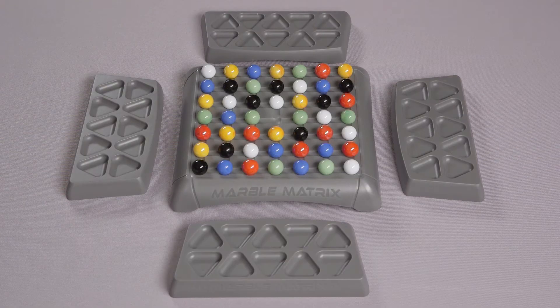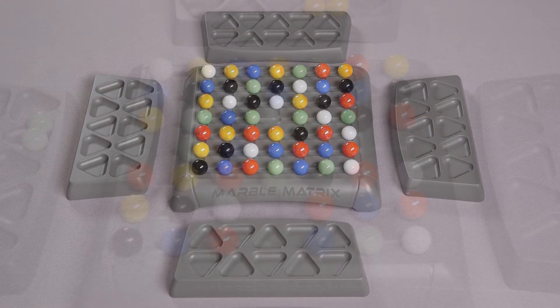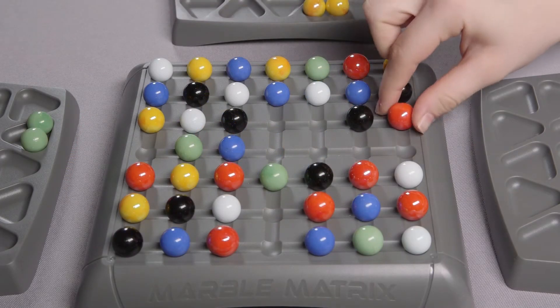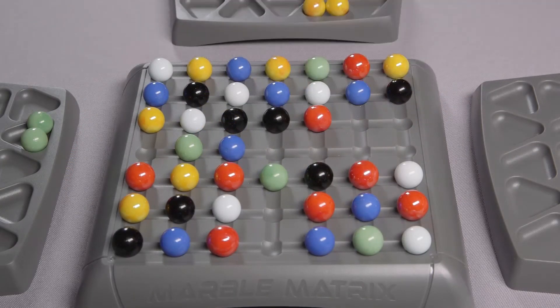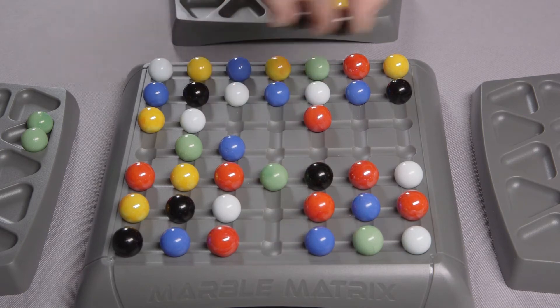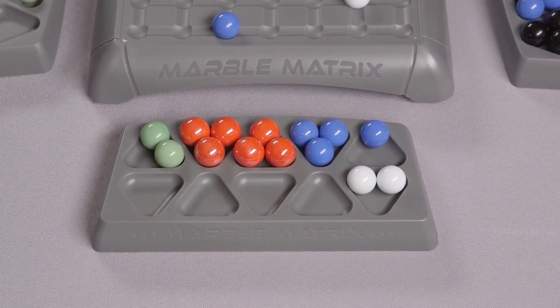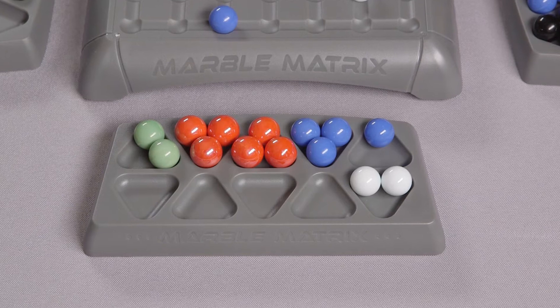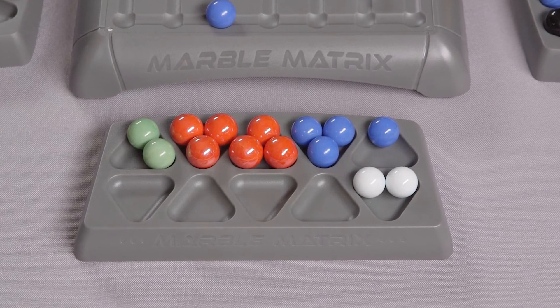Each player receives a marble storage tray to store their collected marbles in. Slide marbles across the grid so that two or more matching marbles line up. Then collect those matching marbles. At the end of the game, players score one point for each set of three matching marbles in their storage tray. The player with the most points wins.